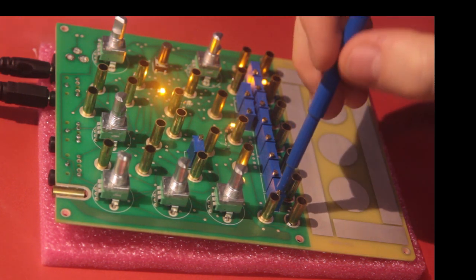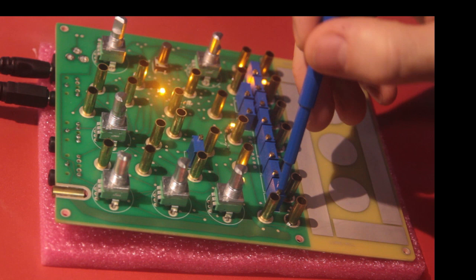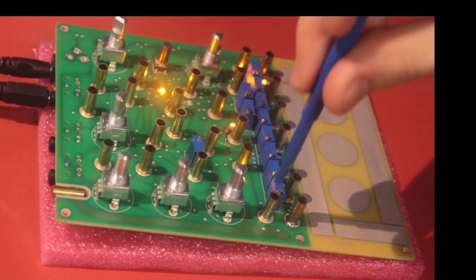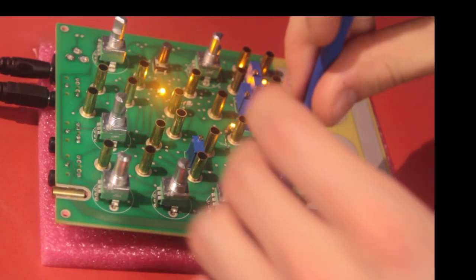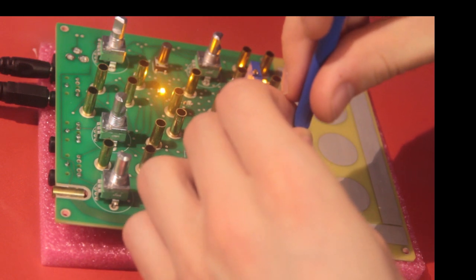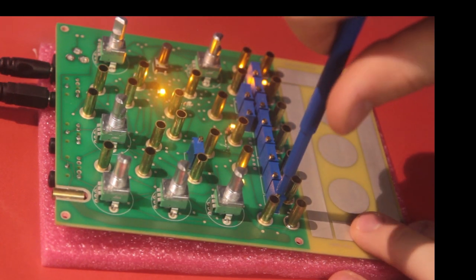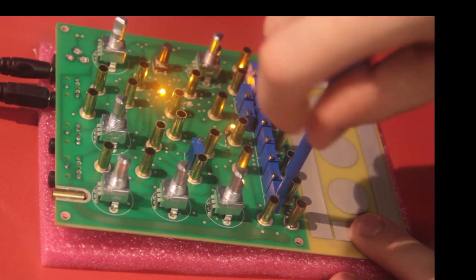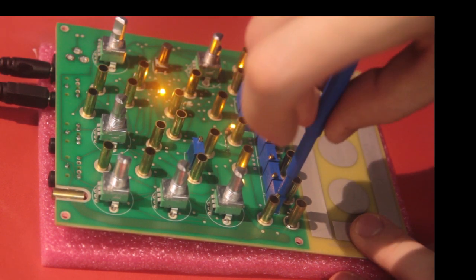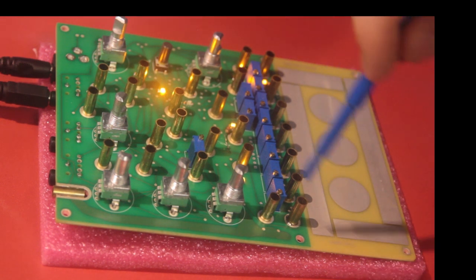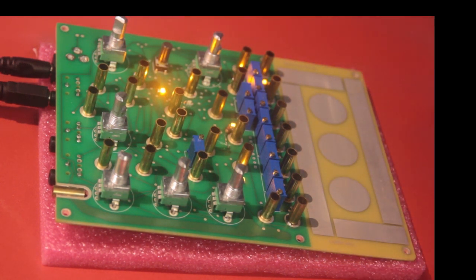The first trim pot here is the zeroth note. So when you're not touching any of the three circle keys, this is the note that will be playing. I usually tune that as low as it can go, all the way clockwise.